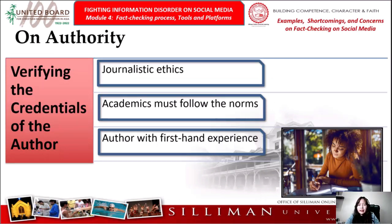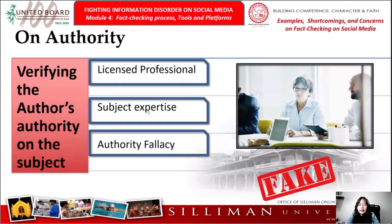On verifying the credentials of the author, remember that journalists are expected to uphold journalistic ethics, particularly if they work for reputable media outlets. Academics must follow the norms in which they have been educated. We may view an author as more credible if they have first-hand experience about the subject. Next, verify the author's authority on the subject — we may trust an author more if they are a licensed professional in the subject matter they are discussing.